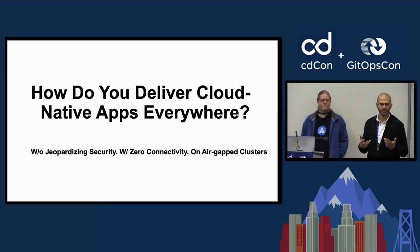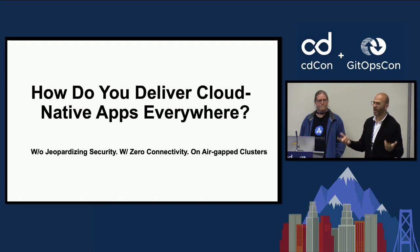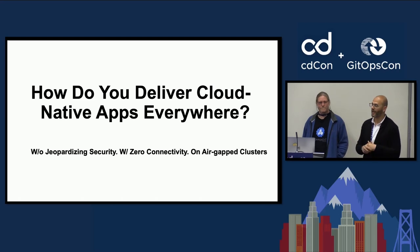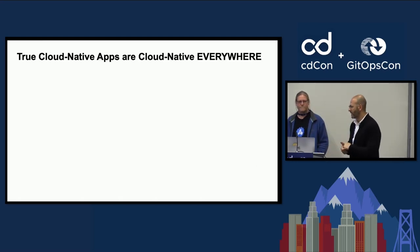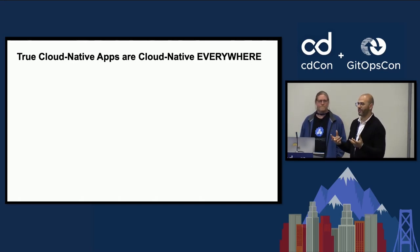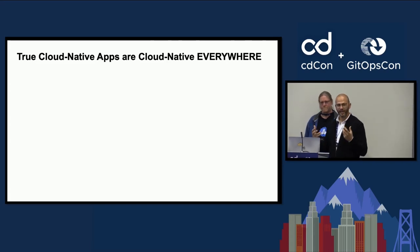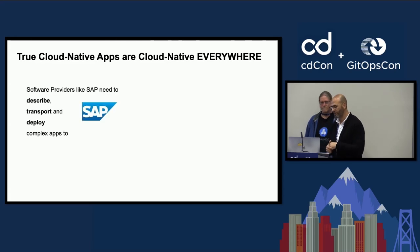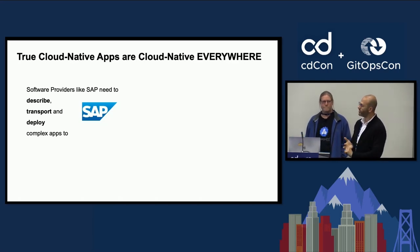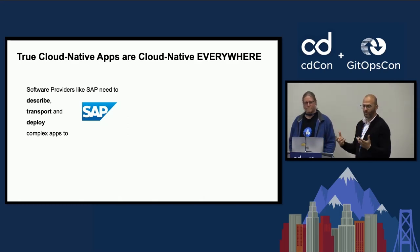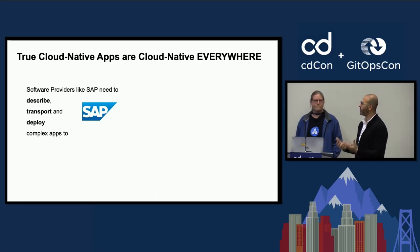Let's explore the topic together. How do you deliver a cloud-native app everywhere and on any cloud infrastructure without jeopardizing security, without having the luxury of being connected, as in public clouds, in an air-gap environment? That's the first question that came to the OCM creators' minds. It happened as a result of three scenarios. The basic concept they had in mind is that cloud-native applications should be cloud-native everywhere. The three main keywords I want you to leave with today: how do you describe, how do you transport, and how do you deploy those applications? That's what OCM is all about.